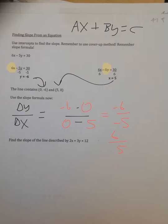Go ahead and find the slope of the line described by 2x plus 3y equals 12 using intercepts. You'll have a question pop up, and you can put in your answer there.